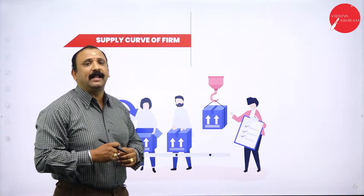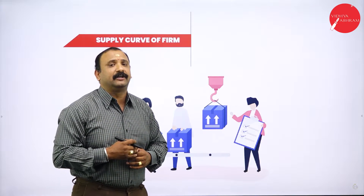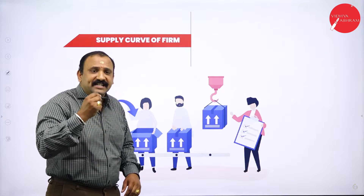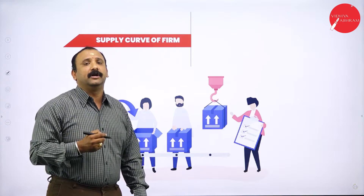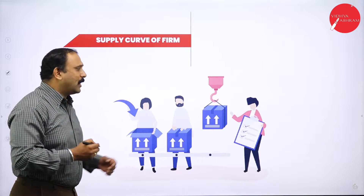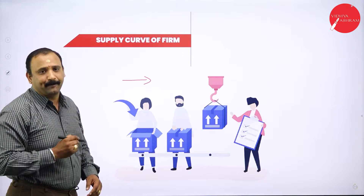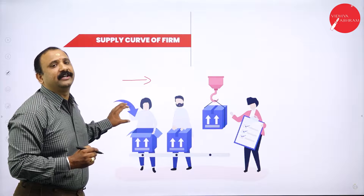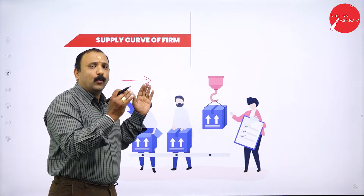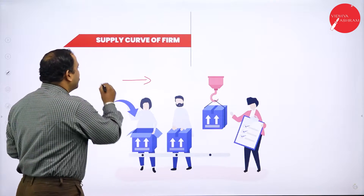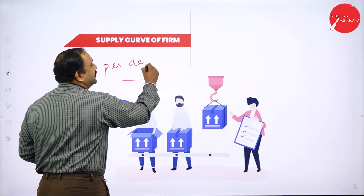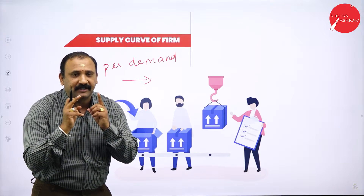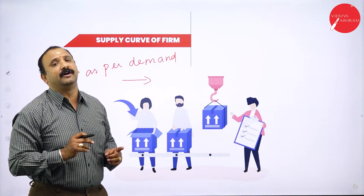Moving forward, we have the supply curve of the firm. The supply curve can be understood by looking at the essentialities a firm undergoes in terms of supply. Goods are being produced, packed, and sent to the retail side. The industry will try to supply goods as per the demand of the customer — that phrase, 'as per the demand,' is very important. Only based on the demand factor will the supply curve of the firm be decided.